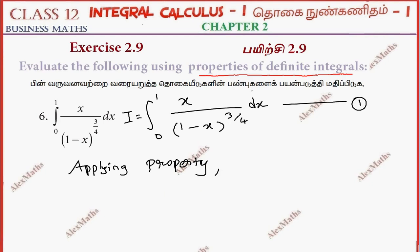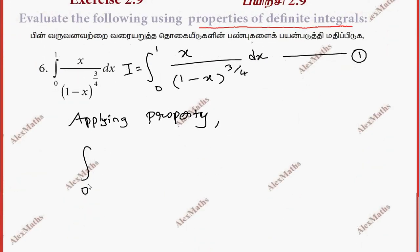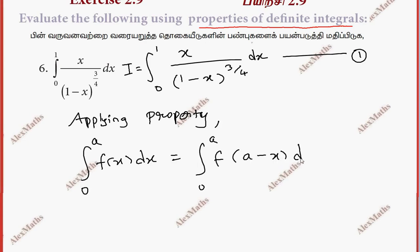So applying properties. The property is: integral 0 to a of f(x) dx equals integral 0 to a of f(a minus x) dx. So here x is equal to a minus x. This is one.